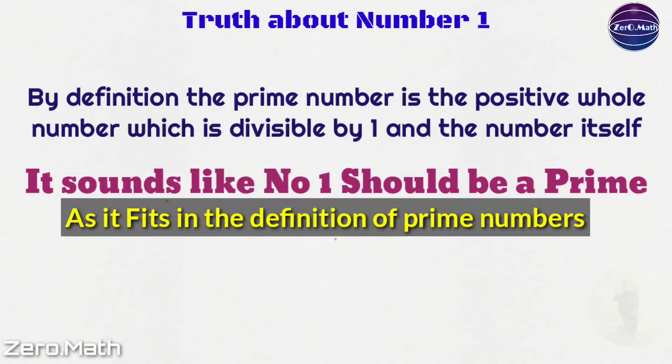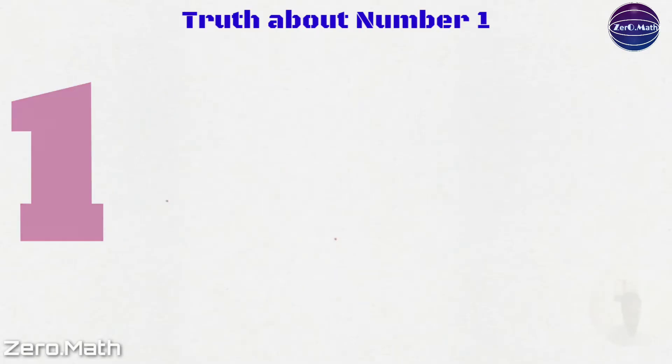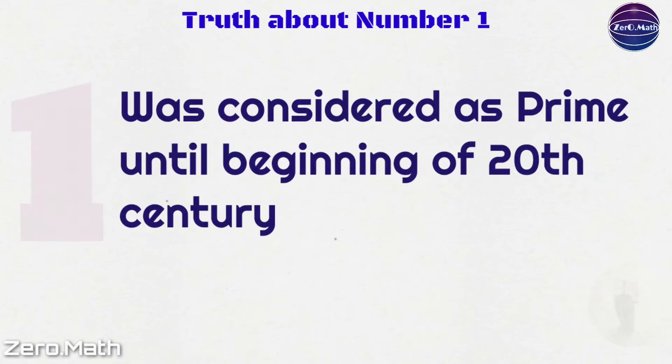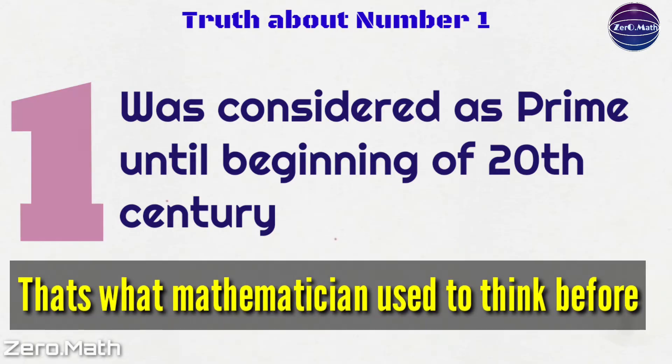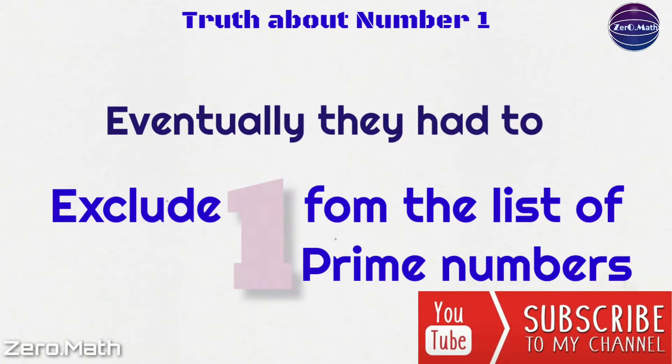So it sounds like number 1 should be a prime number because it fits the definition. It is divisible by 1 and the number itself, that is number 1. Number 1 was considered as a prime number until beginning of 20th century. That's what mathematicians used to think before, but eventually they had to exclude it.